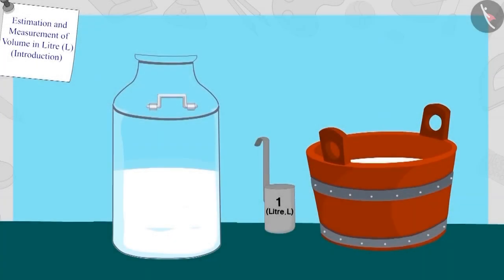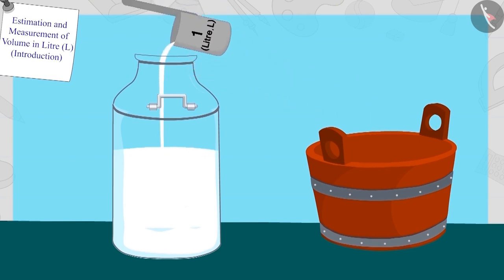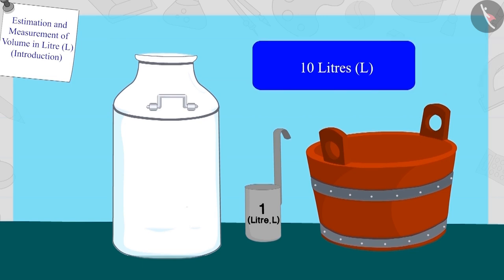Well done! Your answer is absolutely correct. After pouring six, seven, eight, nine, and ten liters of milk, the can was fully filled. Hence, the capacity of this can is ten liters.